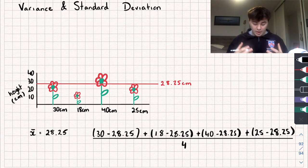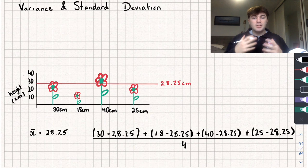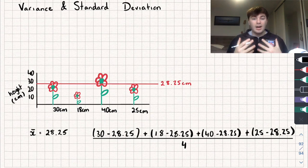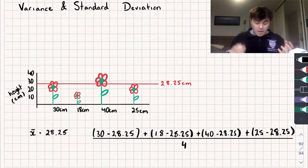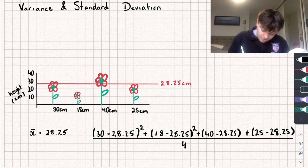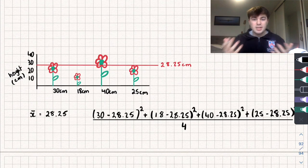If we calculate this it's going to give us zero, because what we're doing is taking the mean value and subtracting four times the mean divided by four. So we don't want to take the arithmetic mean — we want to take the quadratic mean, which makes everything positive and allows us to take a mean value. So all we're going to do is square each of these differences, and this value will give us our variance.